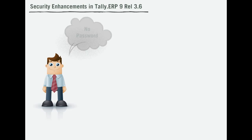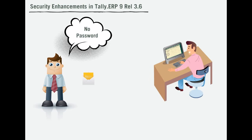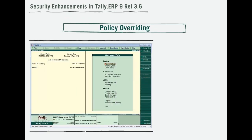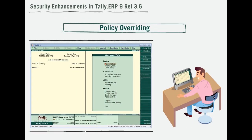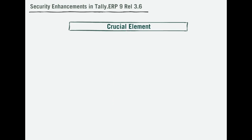Consider a situation wherein a business owner wishes to exclude himself from having to enter a password to access his data. With Release 3.6, the owner can request the administrator to exclude him from the policy. Hence, with this policy overriding feature of Release 3.6, the administrator can easily exclude a user to accommodate for an ever-changing business routine.